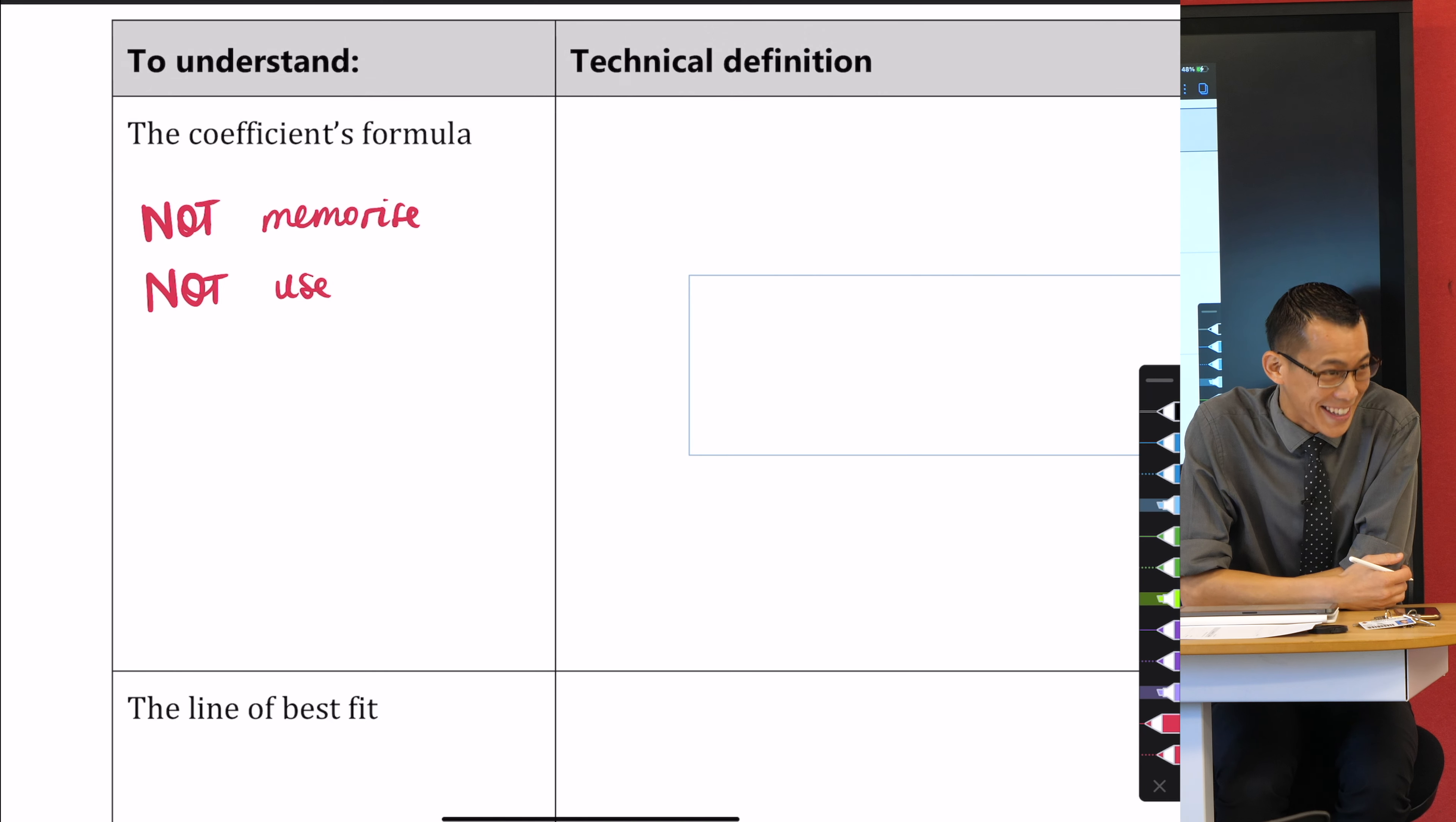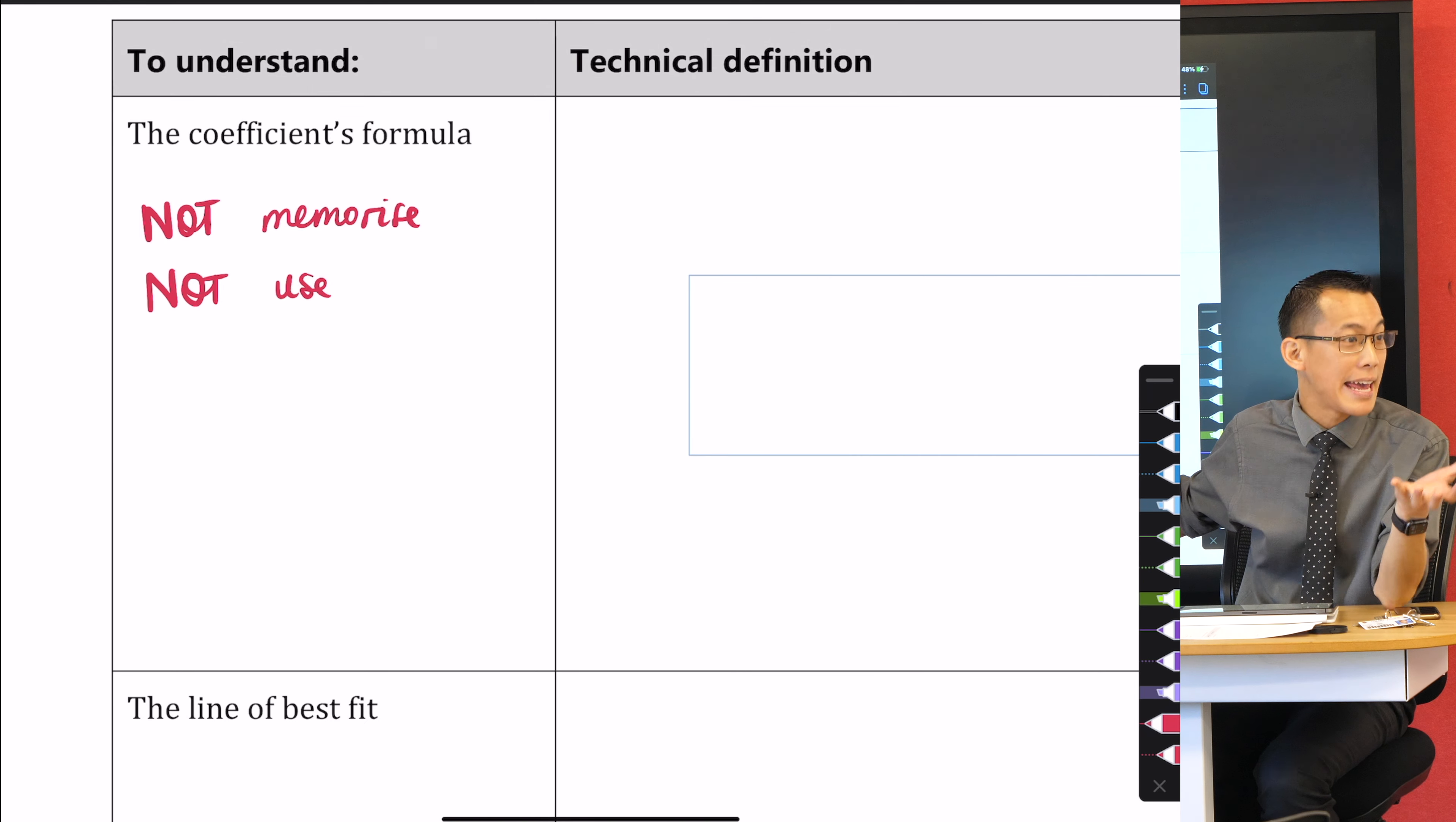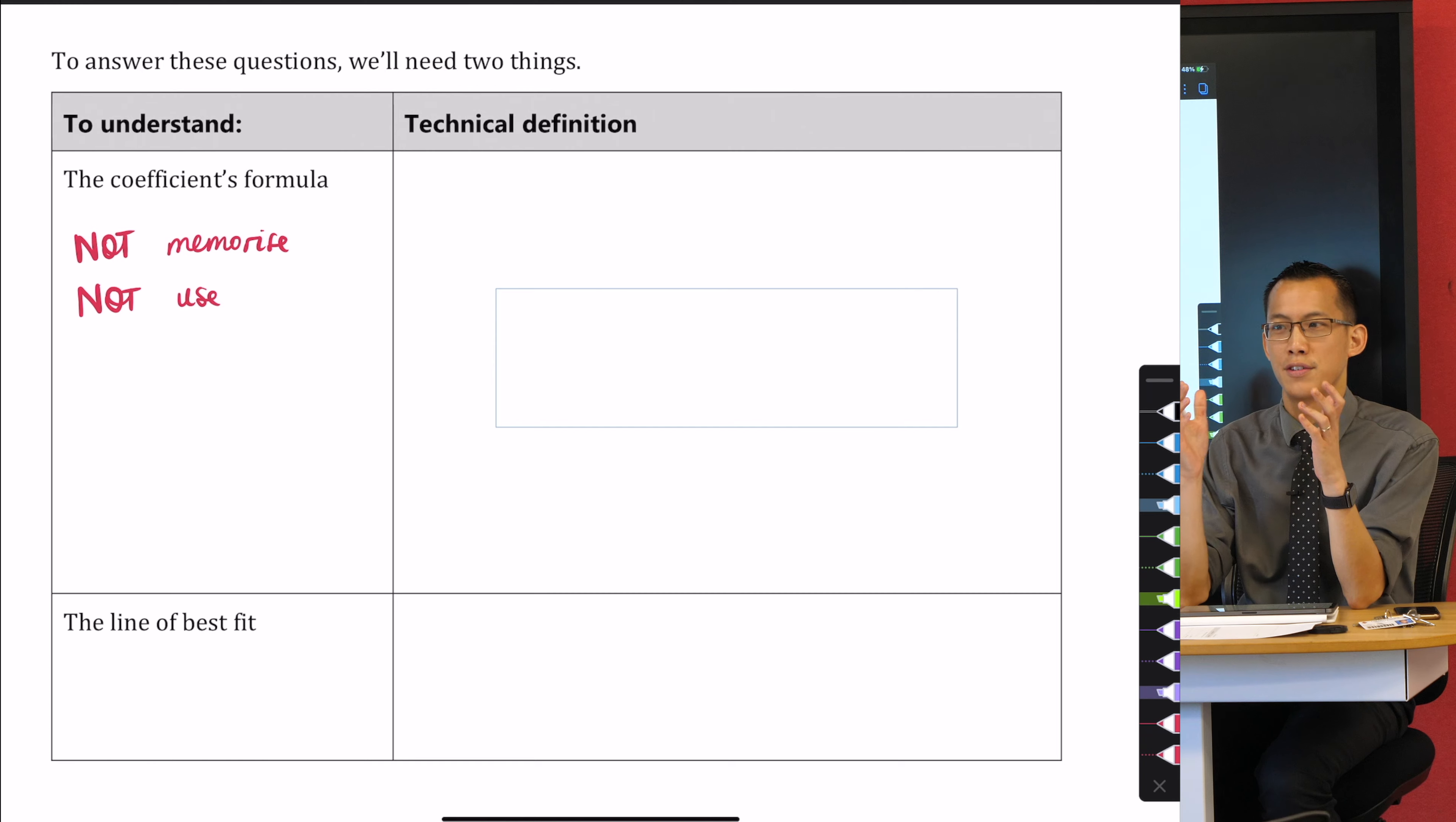If we're never going to use it and if we're not memorizing it, the answer is you can't explain what the correlation coefficient is without knowing what it's doing. So don't freak out when I show you this formula. Write it down, but it's not here to be panicked about. You're not going to have to use this thing in the future. It's so that we can understand its inner workings.